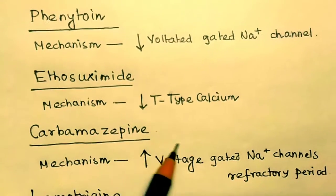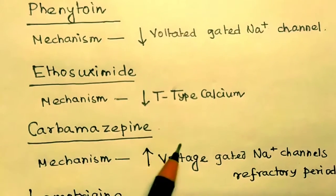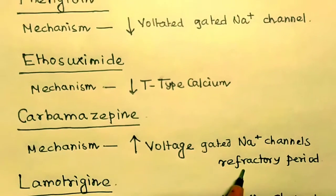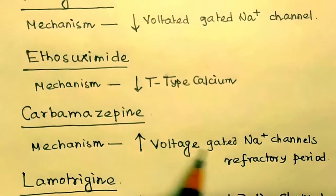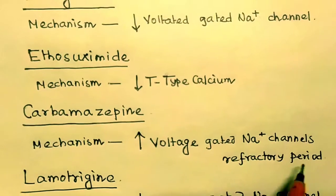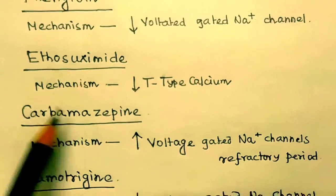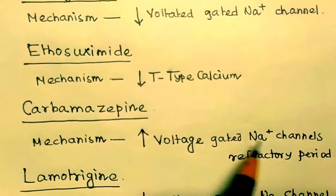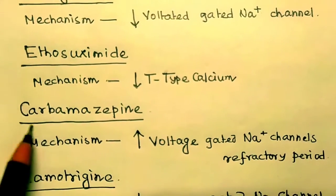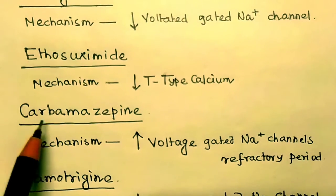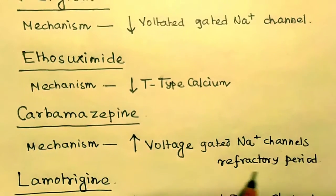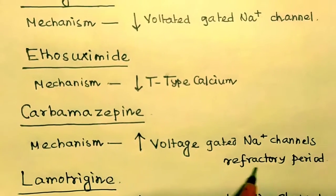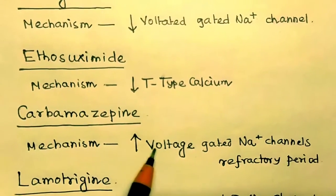The next one is carbamazepine. For carbamazepine, remember that it is related to the refractory period. The voltage-gated sodium channel refractory period will be increased with carbamazepine. To remember this, think of a car — you travel in a car for a certain period of time. So, carbamazepine increases the refractory period.